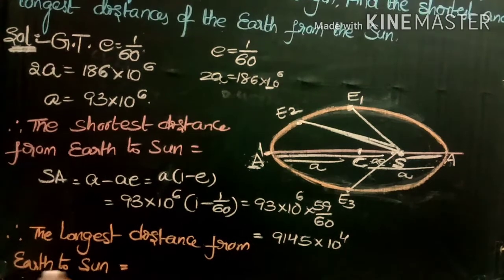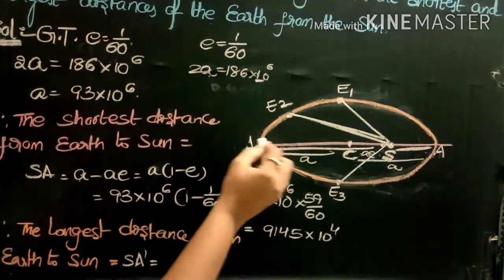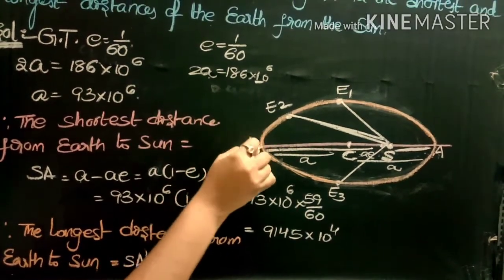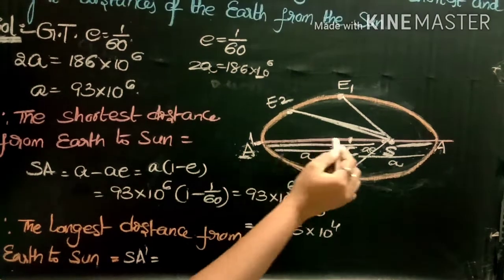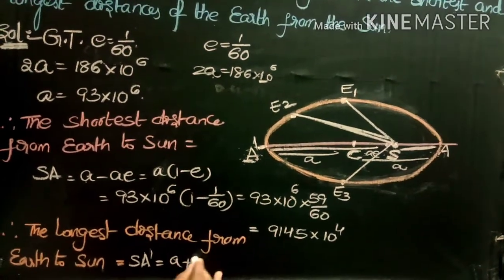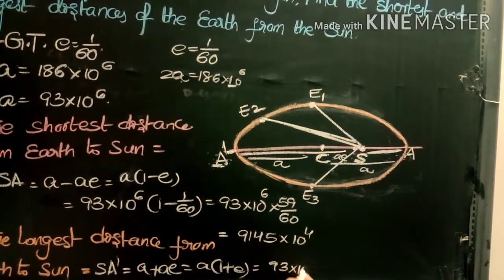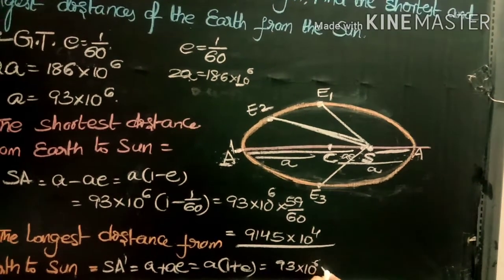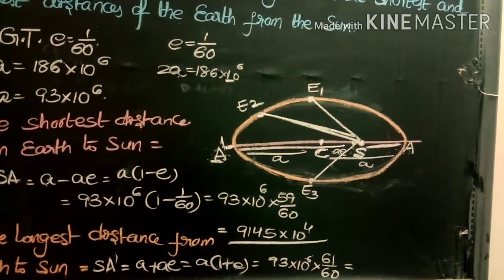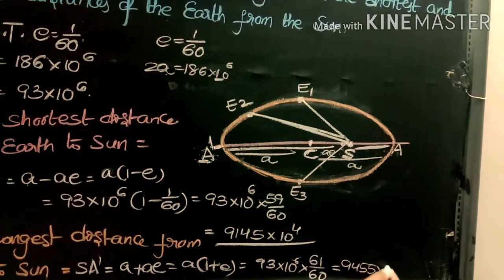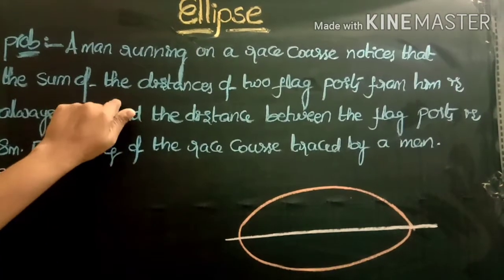The longest distance from earth to sun is SA'. When the earth is at position A', it is the furthest point from the sun. SA' = CS + CA' = ae + a = a(1 + e) = 93×10⁶ × (1 + 1/60) = 93×10⁶ × (61/60). After simplification, the longest distance = 9455×10⁴.